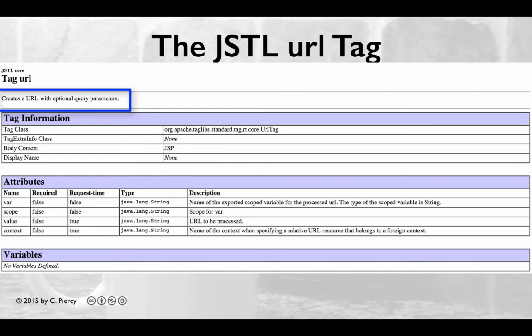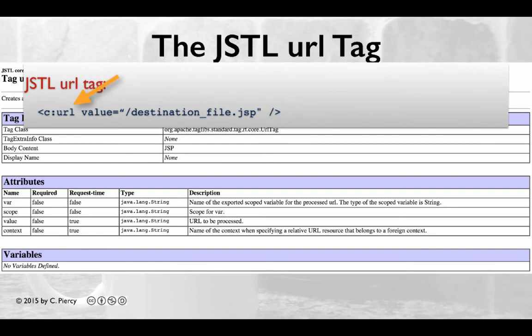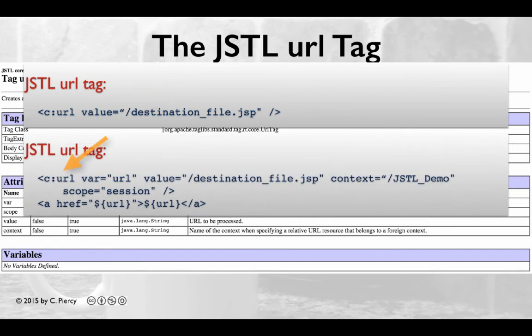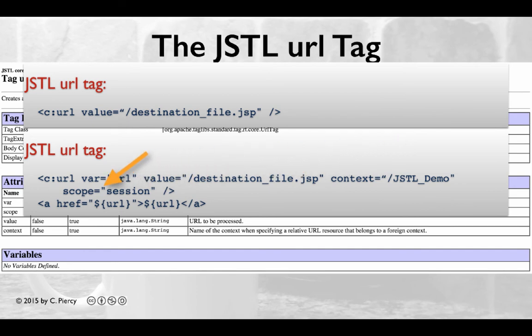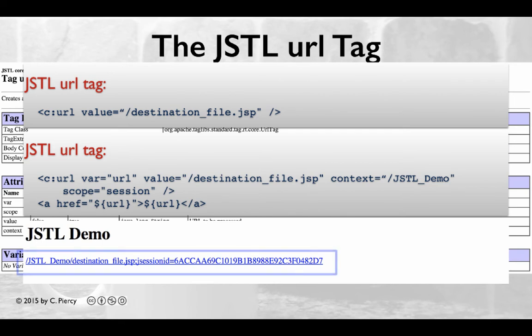We can use the JSTL URL tag to create a URL with some optional query parameters. The most commonly used format is to use the attribute value to specify the URL destination. In this URL tag example, I'm including a variable URL, using value to provide the destination file.jsp, and making this one session scope. In the second line, I am using the variable URL to create a hyperlink. The resulting view includes the context, the destination file.jsp URL, and because we have added session scope, it also includes the session ID in the output.